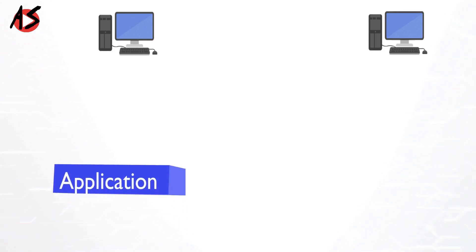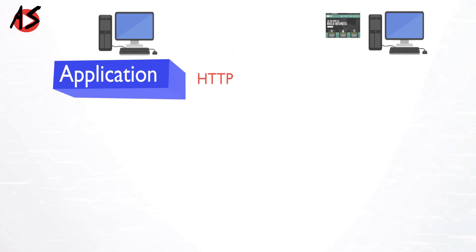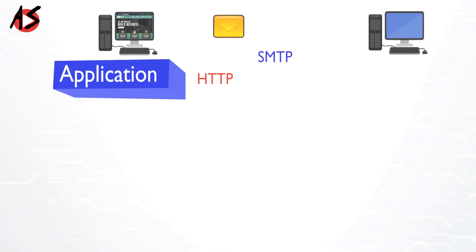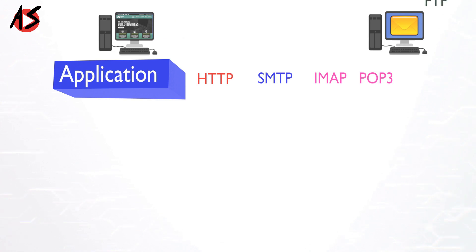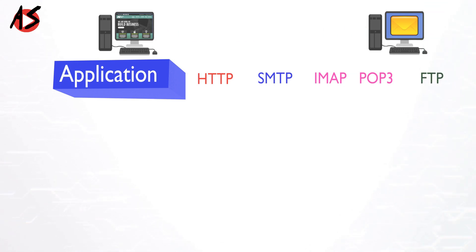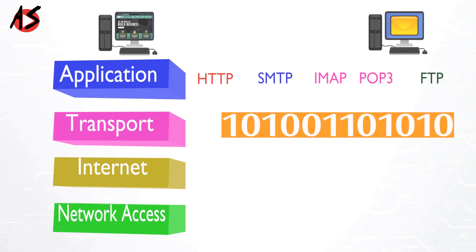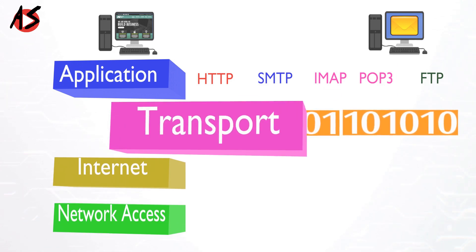We have seen application layer protocols like HTTP to access web pages, SMTP to send an email, IMAP and POP3 to retrieve an email, and FTP for file transfer. All such protocols send data to the next layer in the TCP/IP model called the transport layer.